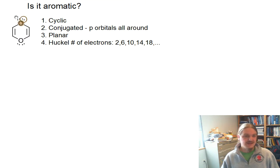Generally, we can recognize cyclic. This molecule is cyclic, so that one is good. Conjugated, P orbitals all around. Well, certainly these four carbon atoms where I have drawn pi bonds are conjugated. But what about those oxygens? Do they have P orbitals?